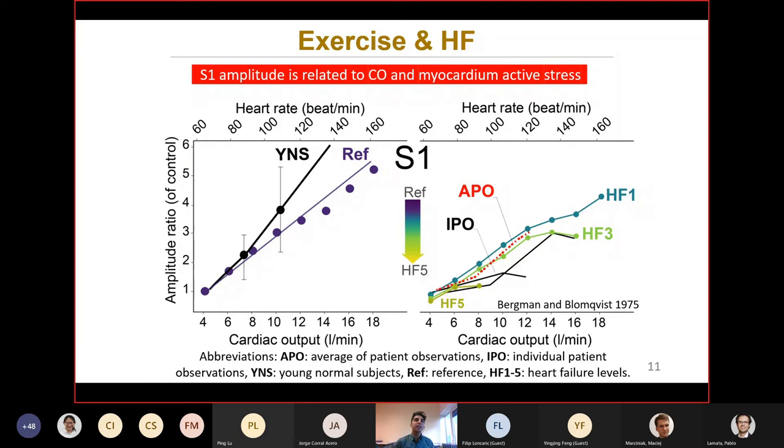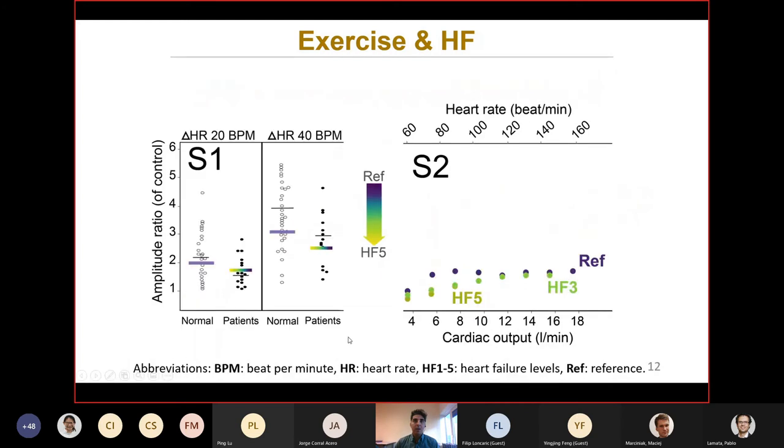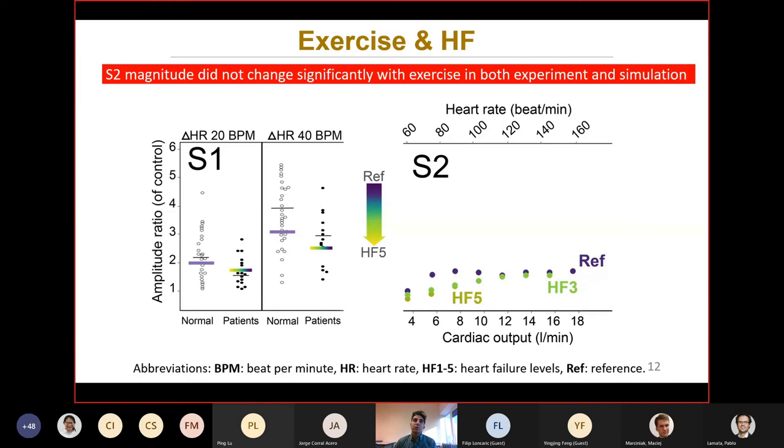So, S1 amplitude is related to cardiac output and myocardium active stress. In this figure, our data shows that our data is close to the average of amplitudes in both normal and patients, which have 20 beats per minute and 40 beats per minute heart rate difference from the reference. And also, it's evident that with exercise, we don't have a significant increase in S2. So, S2 magnitude didn't change significantly with exercise in both experiment and simulation.